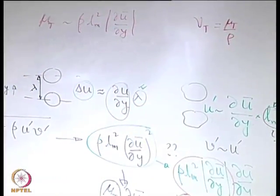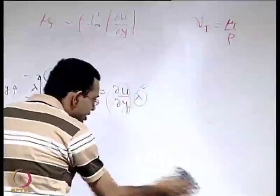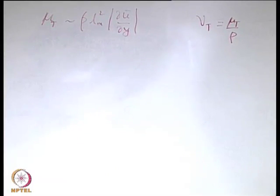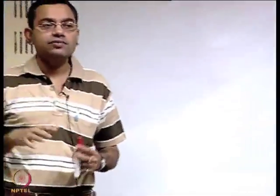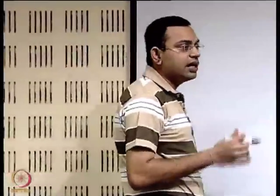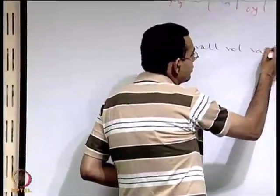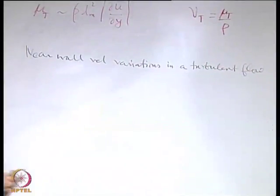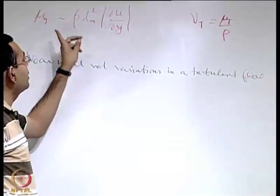Despite the oversimplification, Prandtl's hypothesis gives remarkable understanding. One key insight is how velocity varies very close to the wall in a turbulent flow. We will now develop a physical picture of near-wall velocity variation using Prandtl's mixing length model as a starting point, looking at the problem from multiple angles.